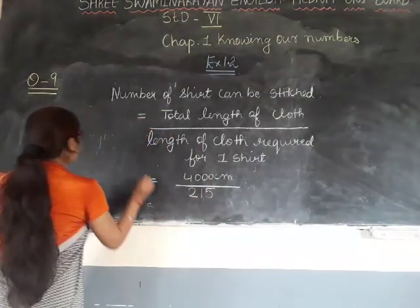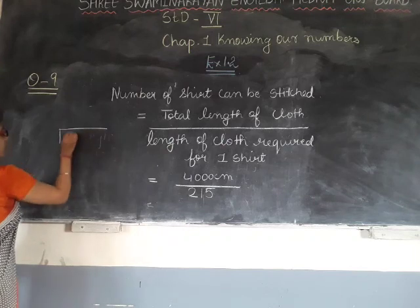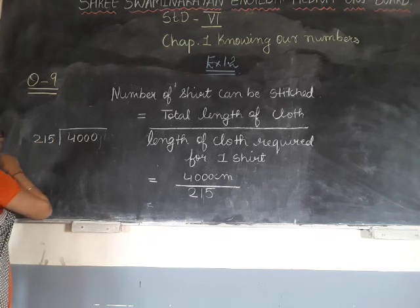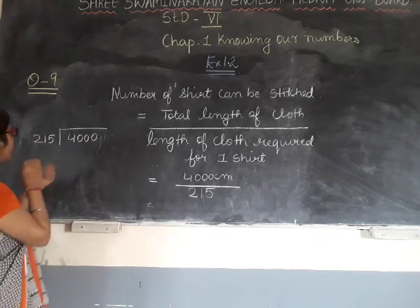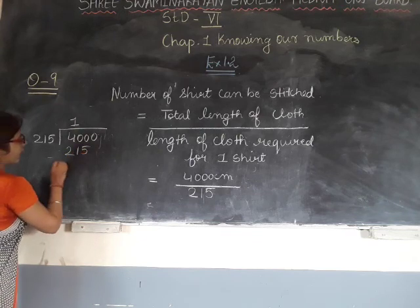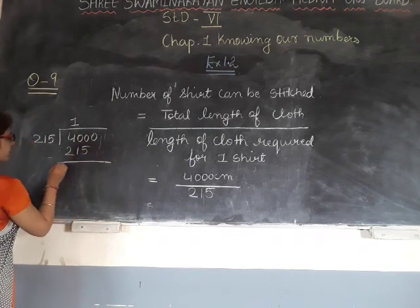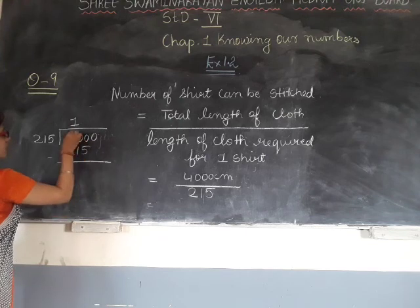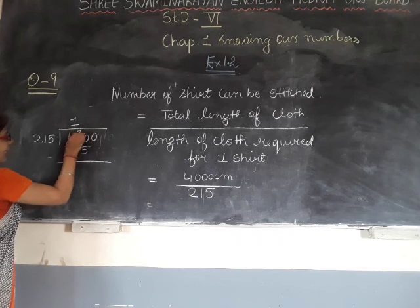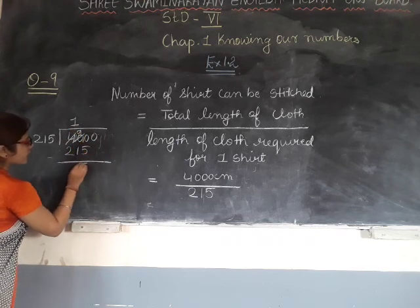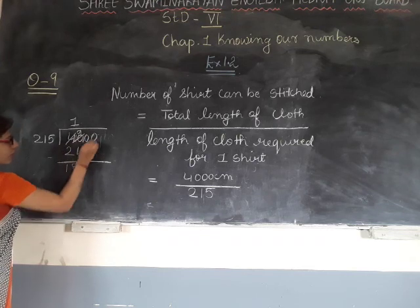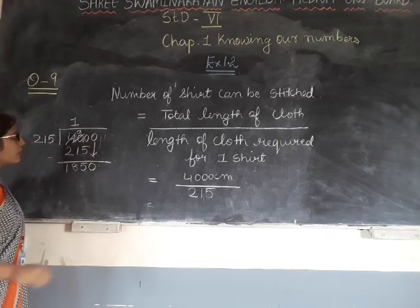We will divide and check: 4,000 divided by 215. We stick with 215 and subtract. This becomes 10, then 9. 10 minus 5 is 5, 9 minus 1 is 8, 3 minus 2 is 1. Result: 185, remainder 0.